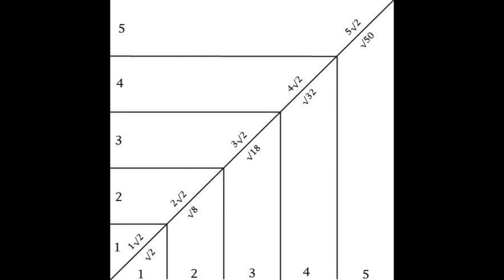Likewise, three times the square root of two equals the square root of eighteen; four times the square root of two equals the square root of thirty-two; and five times the square root of two equals the square root of fifty. This is due to the Pythagorean theorem, a² + b² = c², or the square root of (leg² + leg²) equals the square root of the hypotenuse, wherein the square root of (five² equals twenty-five plus five² equals the square root of fifty).